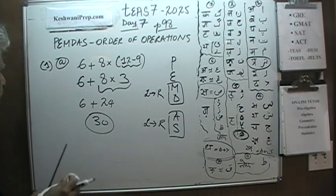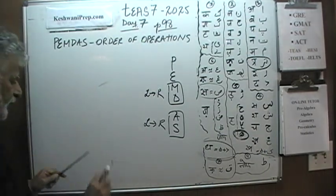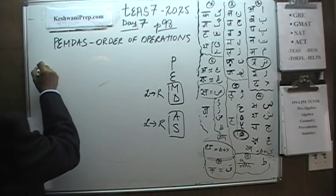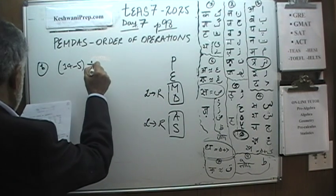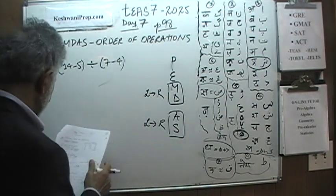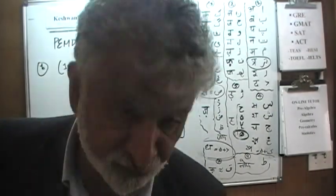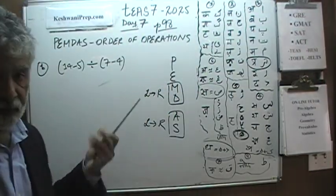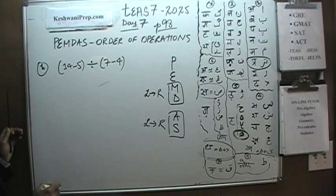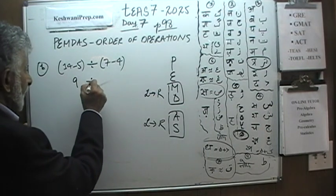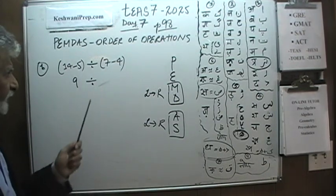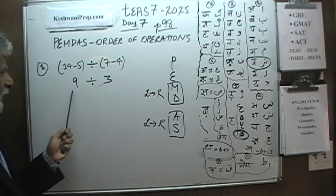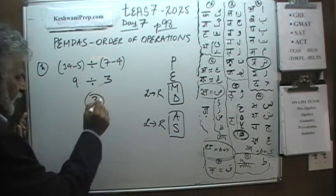Let's do the next one — Part B. Part B says: 14 minus 5, divided by 7 minus 4. This has two parentheses, and we do those first. 14 minus 5 is 9, so that part is done. We can do both parentheses: 7 minus 4 is 3. That's what it is — a very simple problem. Then we do the division: 9 divided by 3 is 3. Nothing to it — very straightforward.